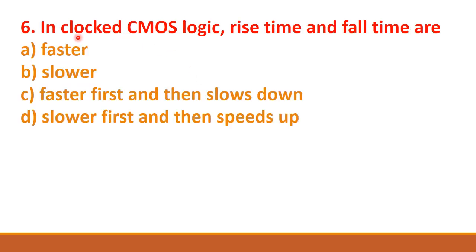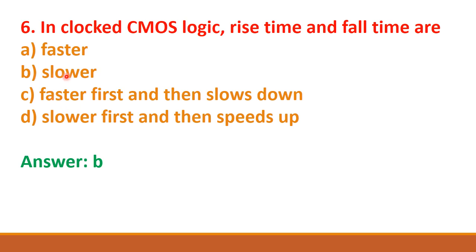Next question: in clocked CMOS logic, rise time and fall time are — four options are given. The correct answer is option B: slower.